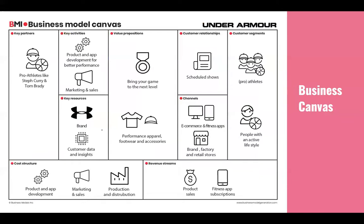This is the business model canvas. For those familiar with business strategy, this will look familiar. Here's an example from Under Armour. You identify your partners — Under Armour is a sports brand, so you identify pro athletes. You look at activities like developing products for better performance, your resources, your brand, customer insight, how you position your value proposition, how you produce unique value for customers, how you interact with your customers through shows or marketing, what the channels are, and what the segments are. For Under Armour, the segments include both professional athletes and people with an active lifestyle, and you look at cost and revenue. This is one way of prototyping as well.